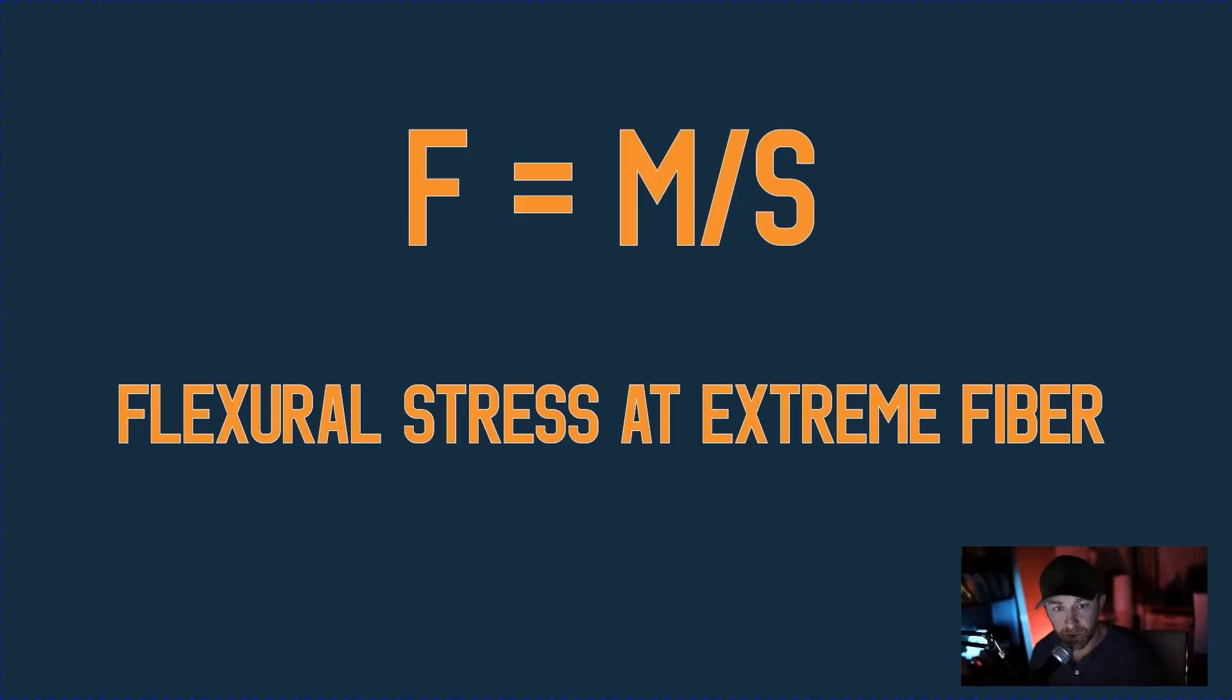So I've got some more helpful links down in the description below. I'm going to try to do more of these formula videos. If you have a specific request for one, leave that in the comments. That's it for now. Let's get started. F equals M over S, also known as the flexural stress at the extreme fiber formula. This is the first one listed in the NCARB handbook. So you are definitely going to have to know this and understand how to use it.